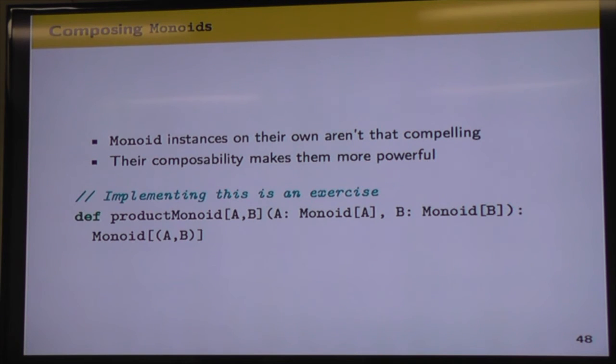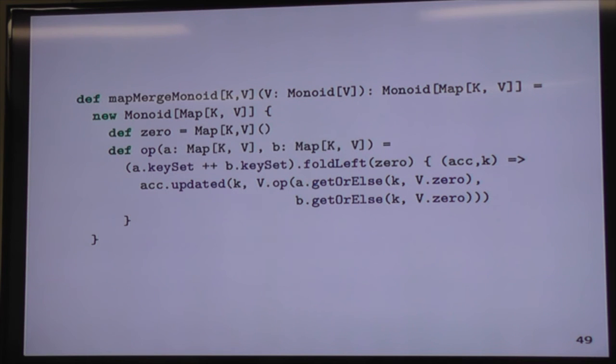Composing monoids. So monoid instances on their own maybe aren't that exciting. We're kind of codifying a pattern that we're all probably somewhat familiar with already. But we can compose them and that allows us to do even more interesting things with them. So one of the first things we can do is this product monoid. We can take a monoid for type A and another one for type B and return a monoid for a tuple of A and B. So this is another exercise for the reader but hopefully not too hard to see how that might work.